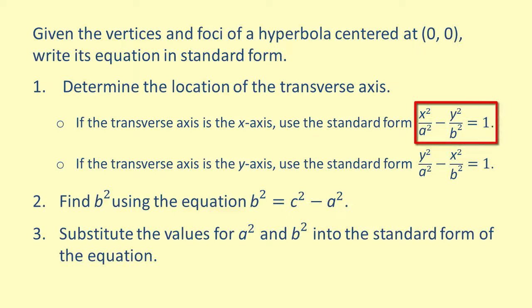In this case, we would use the equation x squared over a squared minus y squared over b squared equals 1.